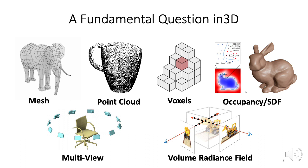The fundamental question in 3D computer vision and graphics is how to represent 3D data. These include point clouds, meshes, voxels, implicit coordinate functions, multi-view, and lastly volumetric implicits like NeRFs.